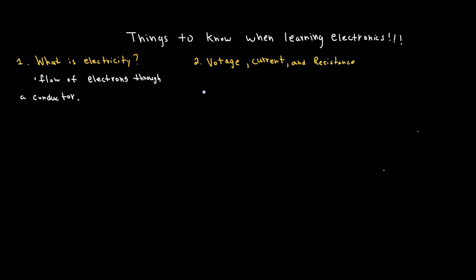These are the three most important terms in electronics. Voltage pushes, current is the flow, and resistance slows it down. Next you need to know what is Ohm's law. This is the basic formula that connects voltage, current, and resistance. It helps you calculate and design circuits.